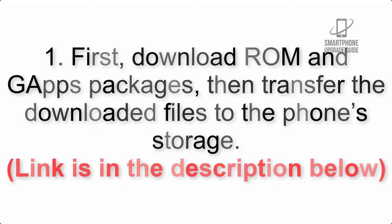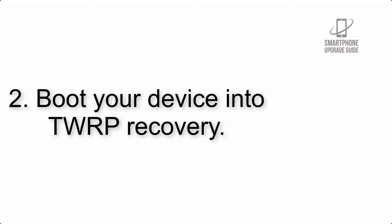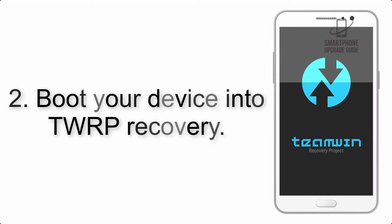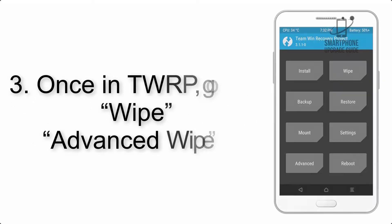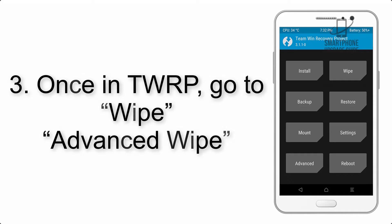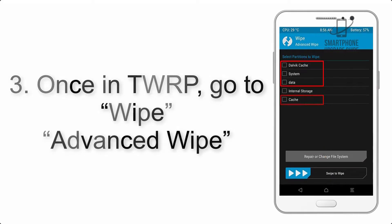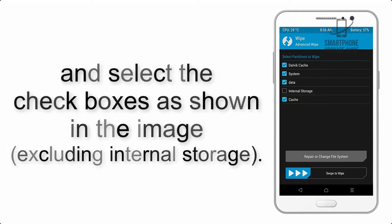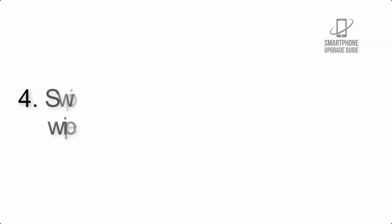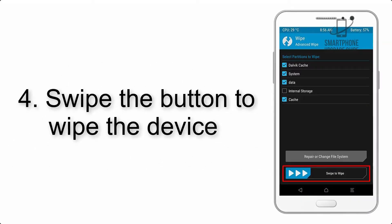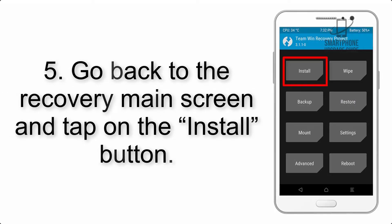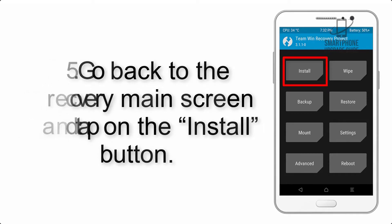Step 2: Boot your device into TWRP recovery. Once in TWRP, click on Wipe, then Advanced Wipe, and select the checkboxes as shown in the image, excluding internal storage. Step 4: Swipe the button to wipe the device.